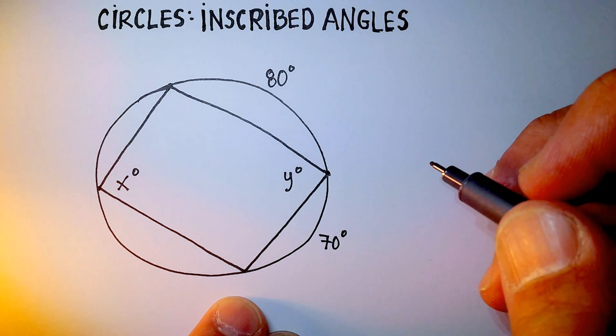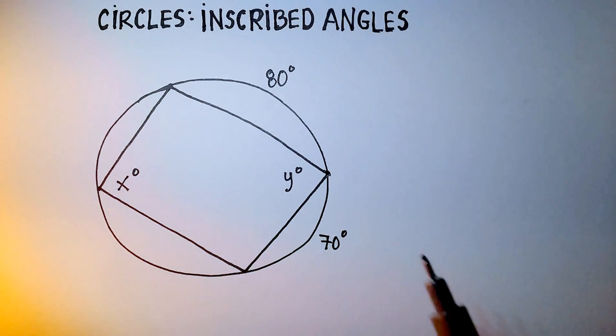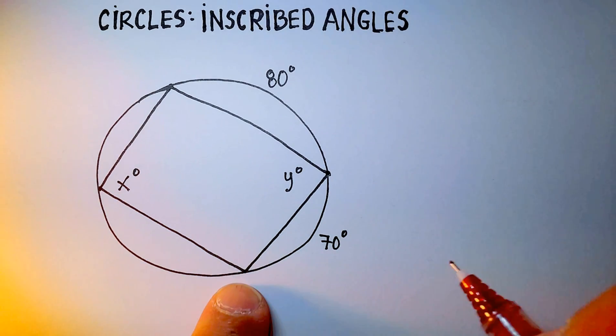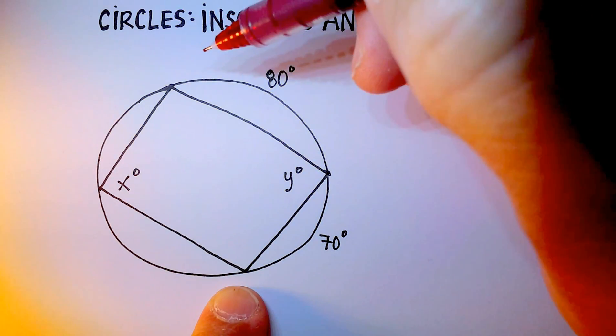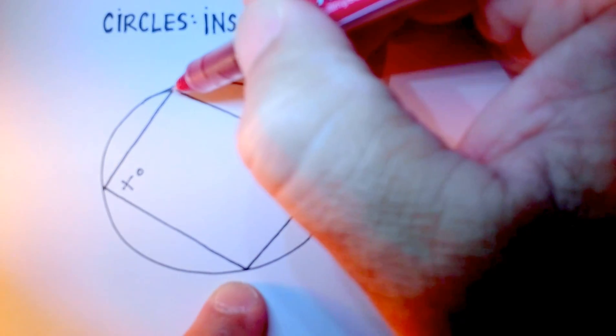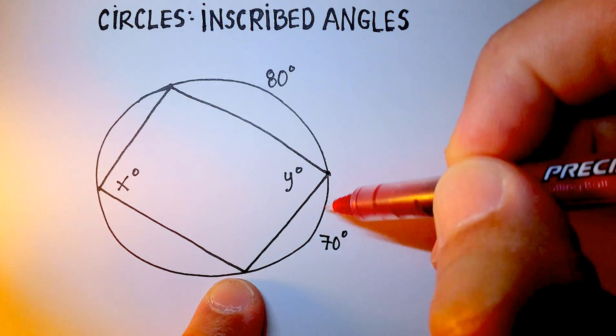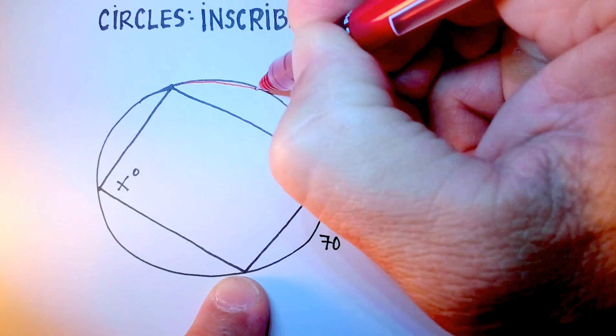Now one of the theorems that you'll need to remember is that the measure of the angle of an inscribed angle is one half of the measure of the intercepted arc.